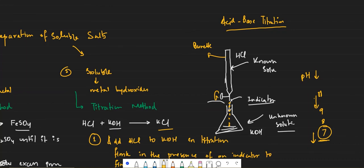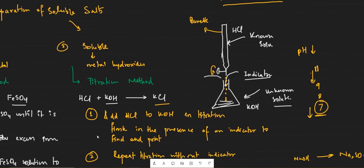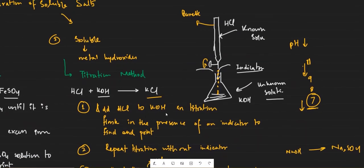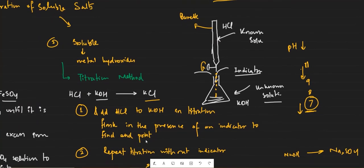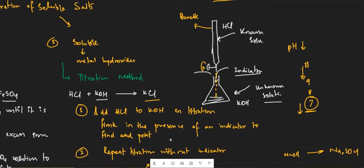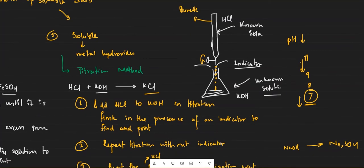You will end up adding slightly more HCl than required — that is the compromise. That is why we use the titration method for preparing soluble salts from metal hydroxides. The first step: add HCl to KOH in the titration flask in the presence of an indicator to find the endpoint. We repeat the titration multiple times to minimize human error and obtain the best results.